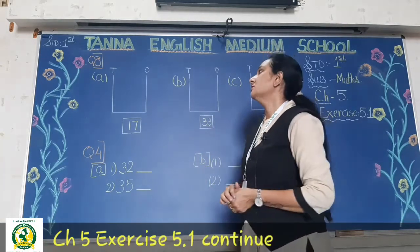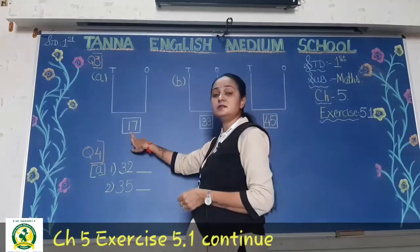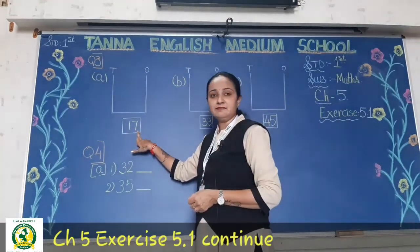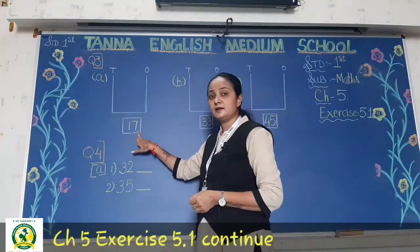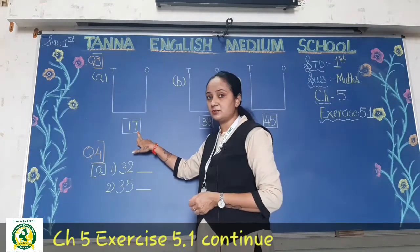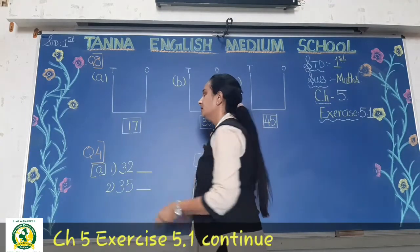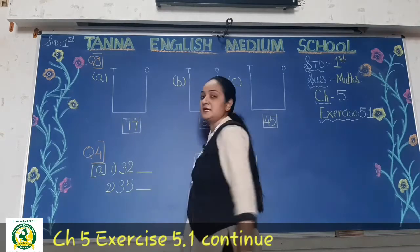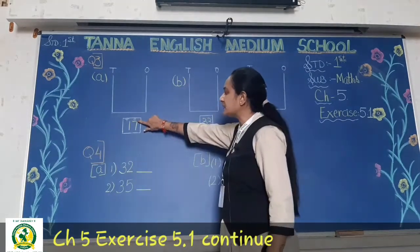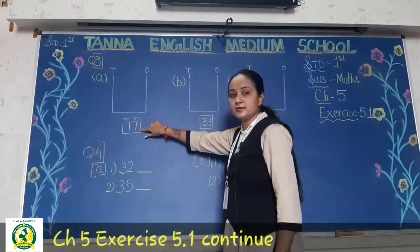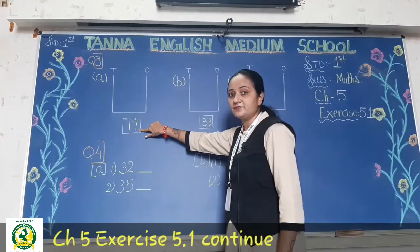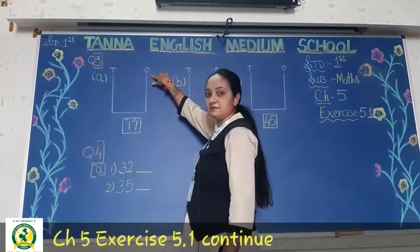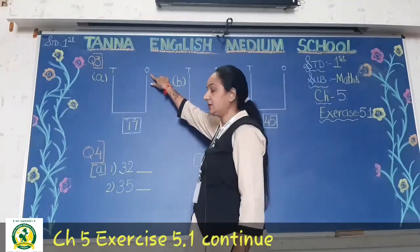The first one: what is written in the box? One seven — seventeen. Now how do you draw it? This is the tens place and this is the ones place. At the ones place, you will draw seven beads.